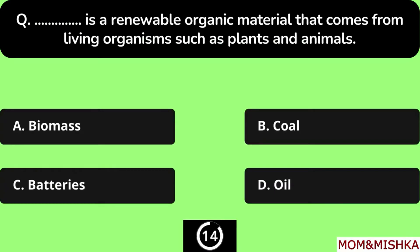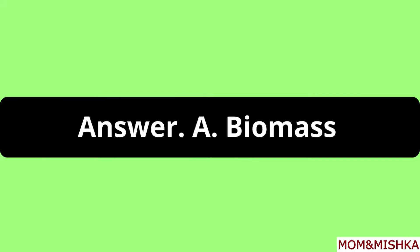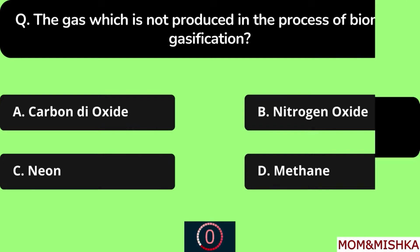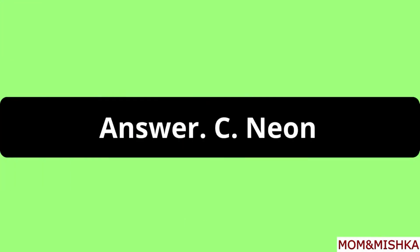Blank is a renewable organic material that comes from living organisms such as plants and animals. Option A: Biomass. The gas which is not produced in the process of biomass gasification is Neon Gas, Option C.